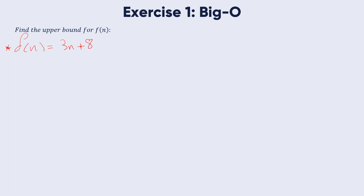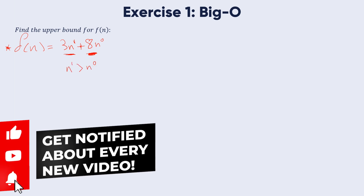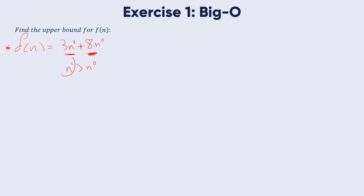If we look at this function, what is the highest order? We have two terms: 3n and 8. Here 8 is 8 times n to power 0, and 3n is n to power 1. Since n to power 1 is greater than n to power 0, we take n to power 1 as the biggest term. So 3n plus 8 is less than 4n.